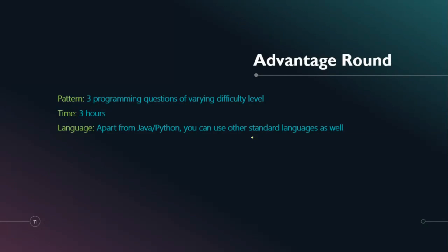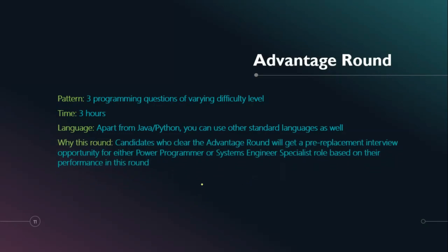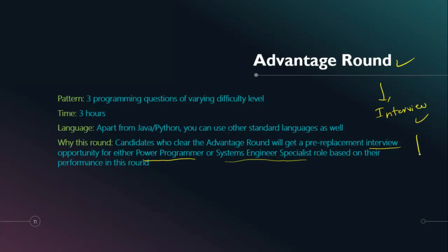In the Advantage Round, you can use additional languages beyond Java and Python — C++, JavaScript, PHP, and other standard languages are allowed. Candidates who clear this round get a pre-placement interview opportunity for either the Power Programmer or System Engineer Specialist role at Infosys, depending on your performance.